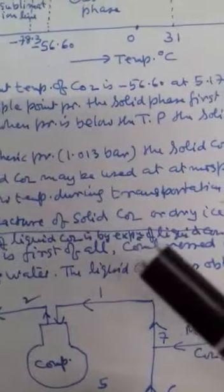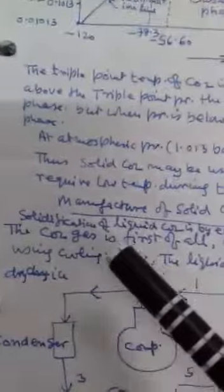Manufacture of solid CO2 or dry ice: one of the most widely used methods is solidification by expansion of liquid CO2 to a pressure below that of the triple point pressure - 60 to 70 psi - then condensed by using cooling water. The liquid CO2 thus obtained is solidified in order to produce dry ice.